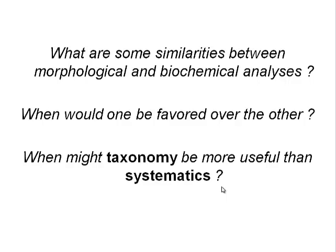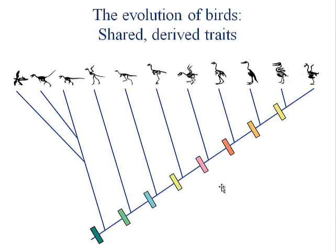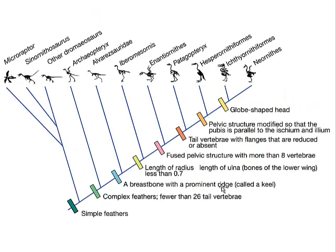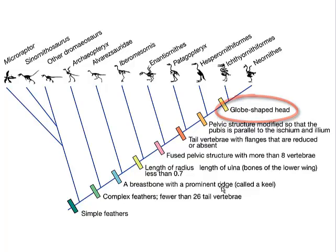The last couple of slides have thought questions to leave you with before we start lab. There's a cool tree of the hypothesized relationship of birds to other groups. The ichthyornithiformes and the neornithes both have globe-shaped heads, while another group has a different pelvic structure. The last three on the right have a backward-facing pubis, and none of the ones on the left do.